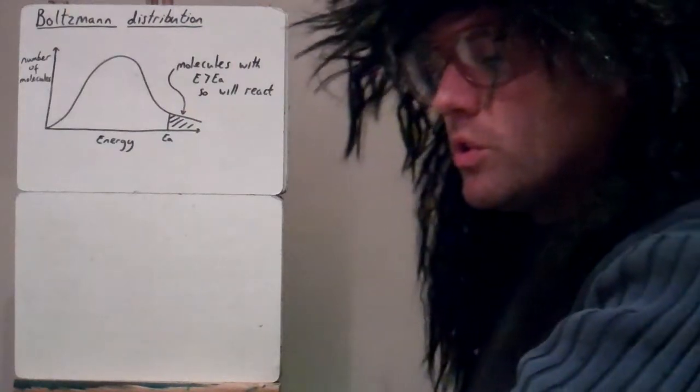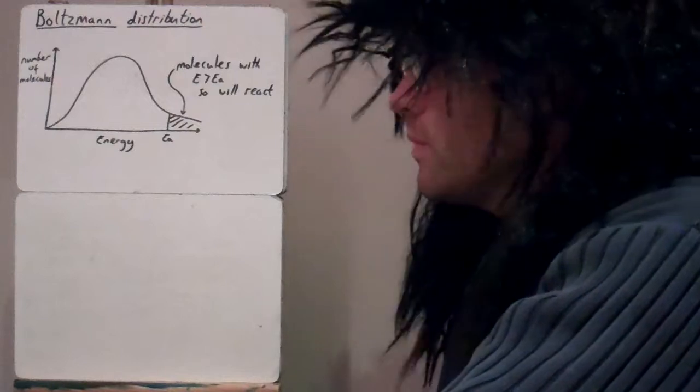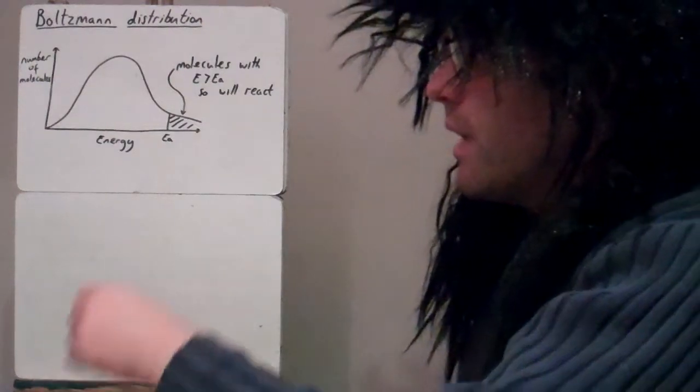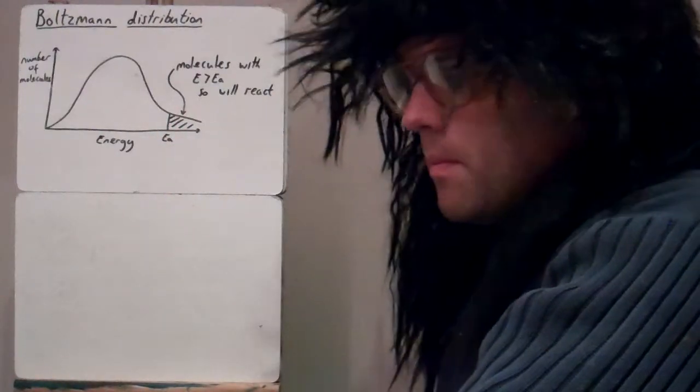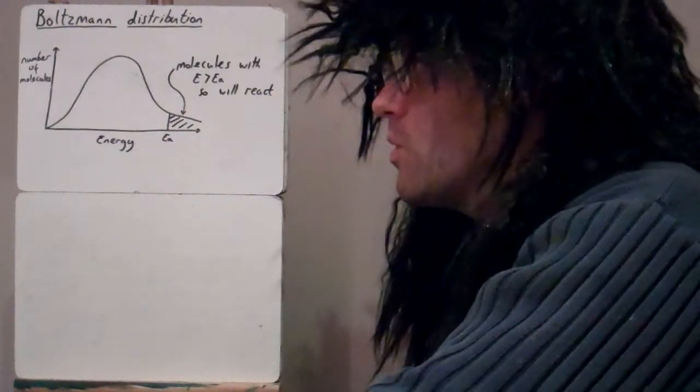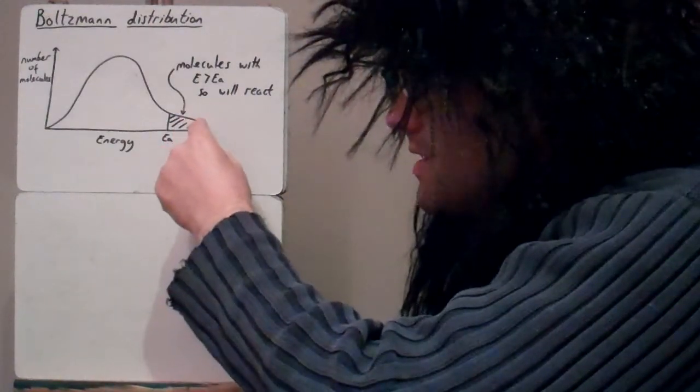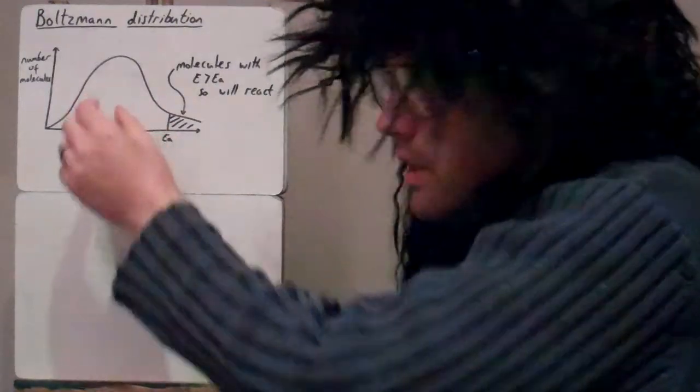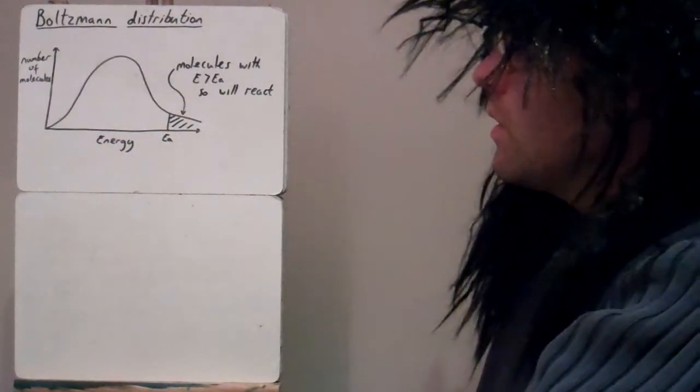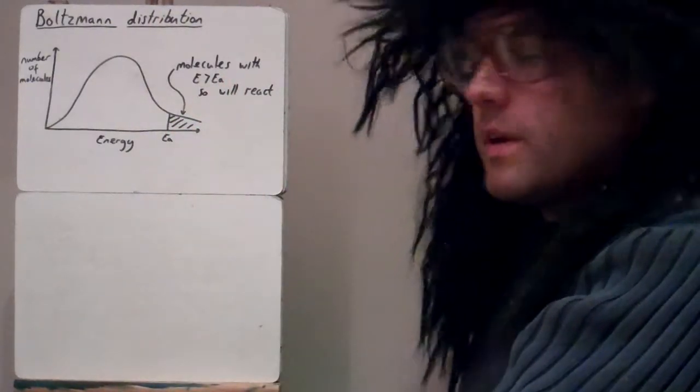The Boltzmann distribution shows the distribution of the energies of molecules in a sample. Here we have marked on activation energy. This line here represents the minimum energy required in order to react. Molecules in this section here would react, ones in this section here wouldn't, because the molecules here have energy greater than activation energy, so they will react.